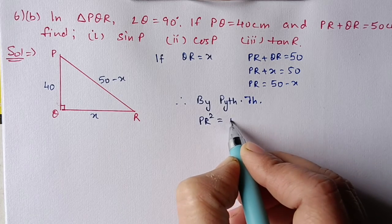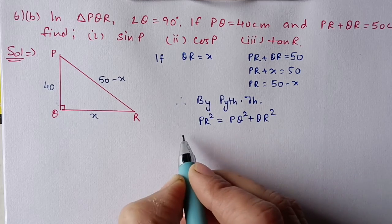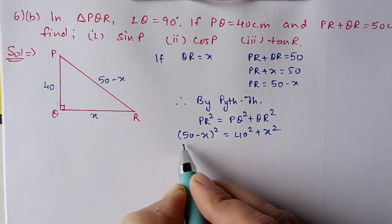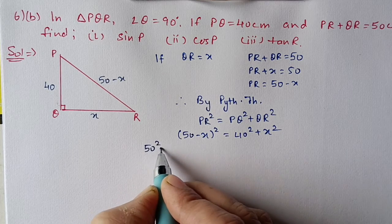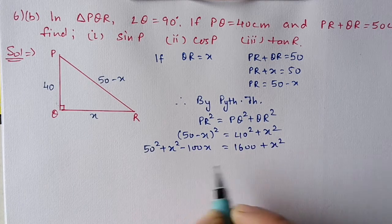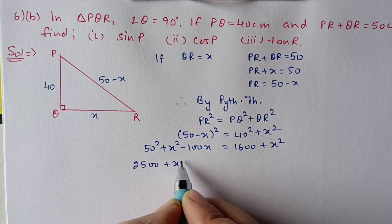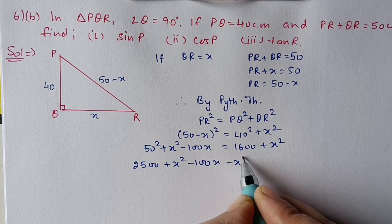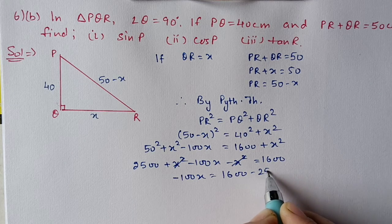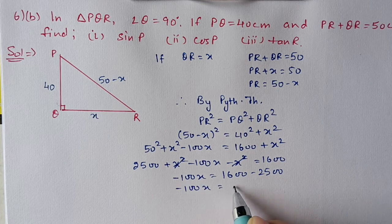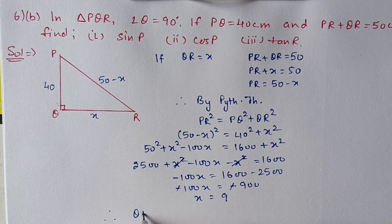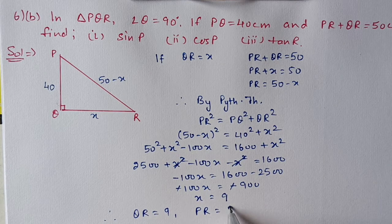By Pythagoras theorem, PR square equals PQ square plus QR square. So (50 minus x)² equals 40² plus x². Applying the (a − b)² formula: 2500 plus x squared minus 100x equals 1600 plus x squared. x squared cancels, and shifting 2500 gives minus 100x equals minus 900, so x equals 9. Therefore QR equals 9 and PR equals 50 minus 9, which is 41.